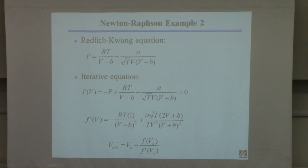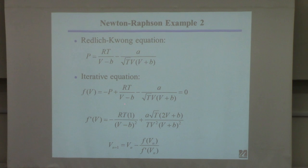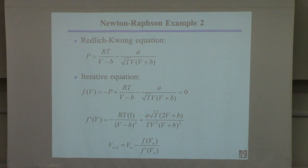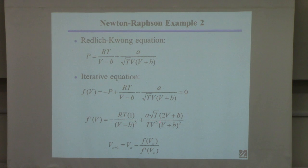Taking the derivative: the first term gives −1/(V−B)² times the derivative of (V−B), which is just 1. For the second term, multiplying it out gives V² in the denominator — you get a minus from the exponent making it plus, the denominator squared includes √T·V², and then you multiply by the derivative of the whole inner expression: √T·V² and √T·V·(V+B) terms. It's just an exercise in differentiation.